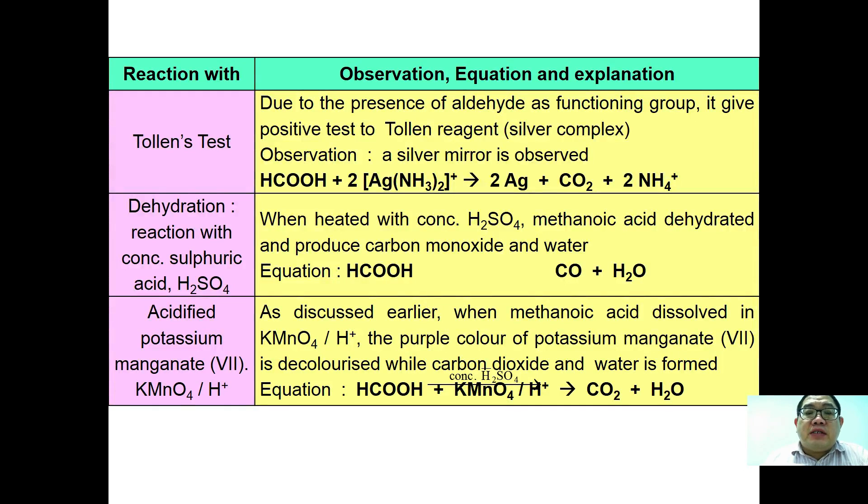These are a few examples of reactions with methanoic acid. Due to the presence of the aldehyde functioning group, it gives a positive test to Tollen's reagent where a silver mirror is observed. According to the equation, methanoic acid reacts with silver complex to form silver, carbon dioxide, and ammonium ion.